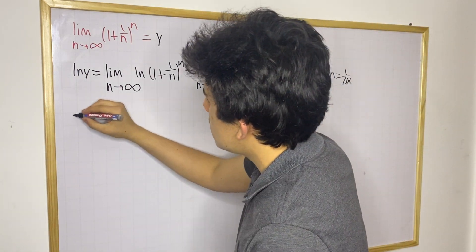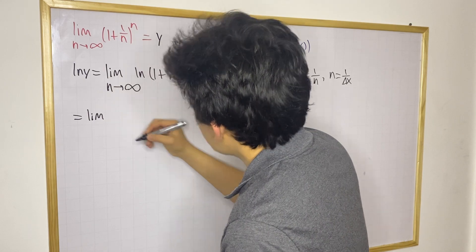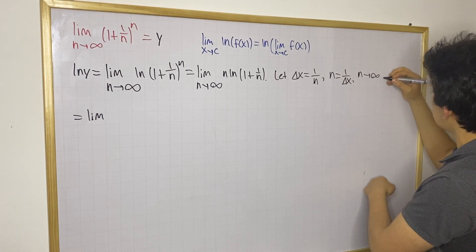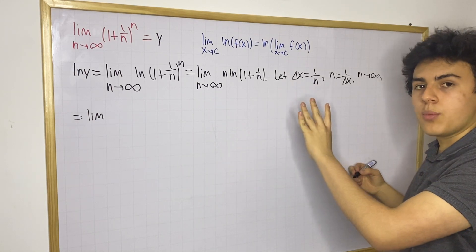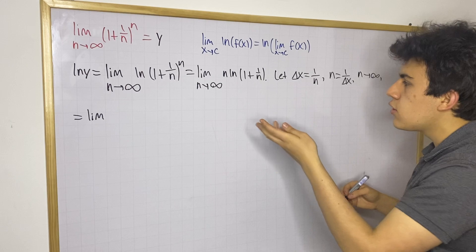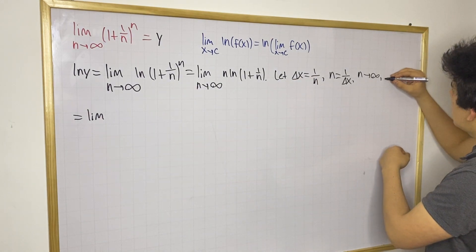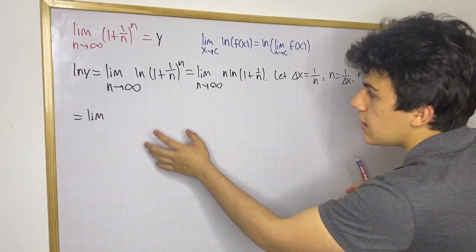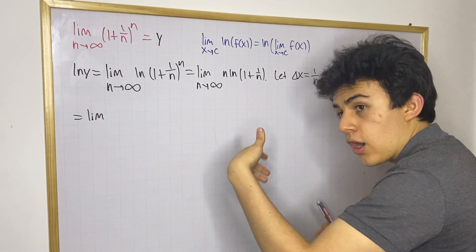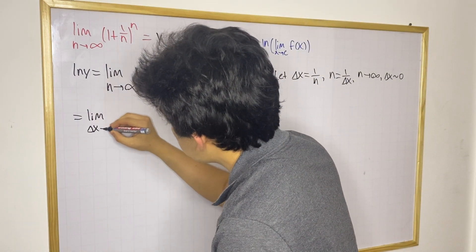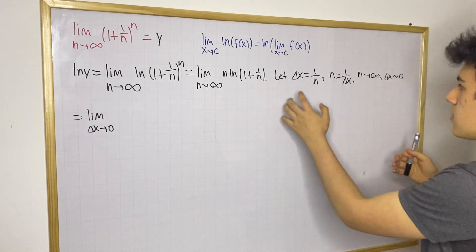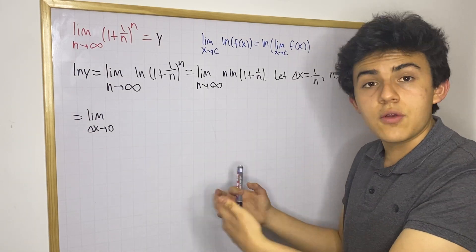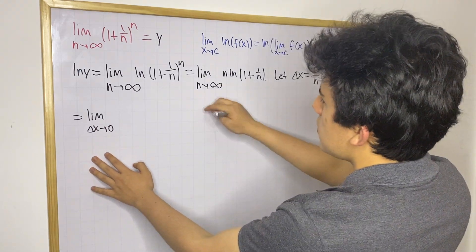Now, since we defined this new variable in terms of n, we can replace n with delta x in this limit. As n tends to infinity, n would be a very big number and delta x would be almost equal to 0. So if you take the limit as n approaches infinity of delta x, we know that delta x would approach 0. From that, you can say this limit using n as our variable is going to be equal to the limit as delta x approaches 0, because 1 over a very big number gives you a very small number.